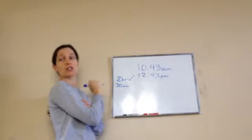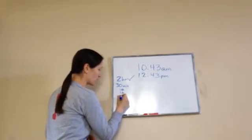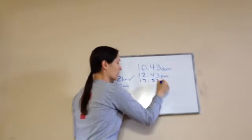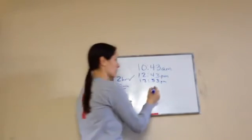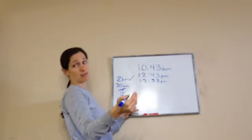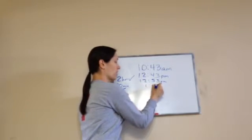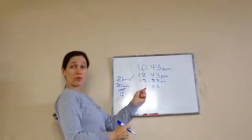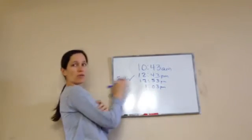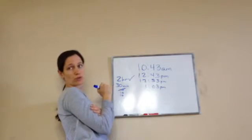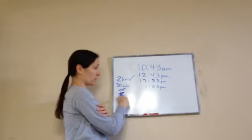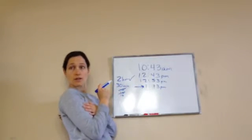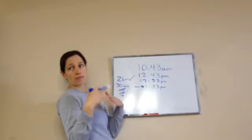Let's add the 30 minutes in 10-minute increments. 12:43 plus 10 minutes is 12:53 p.m. Ten more minutes: 63 minutes — that's over 60, so it becomes an extra hour, making it 1:03 p.m. Ten more minutes: 1:13 p.m. So two and a half hours after 10:43 a.m. is 1:13 p.m. That's the elementary way of thinking through it.